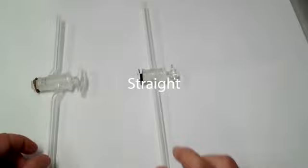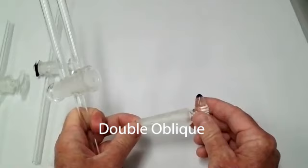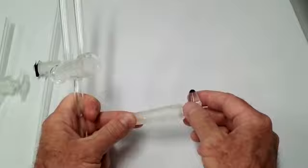First off, we'll cover the different orientations. This is a straight stopcock. Another style is an oblique bore stopcock. Then you have a double oblique bore stopcock, and you can see where the bore goes at an angle, which makes it oblique.